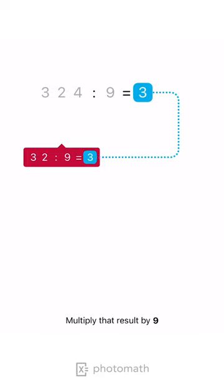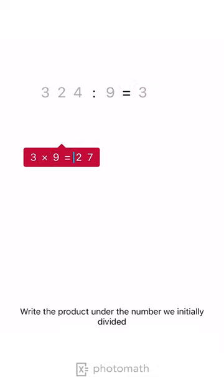Multiply that result by 9. Write the product under the number we initially divided.